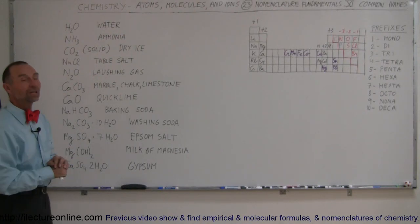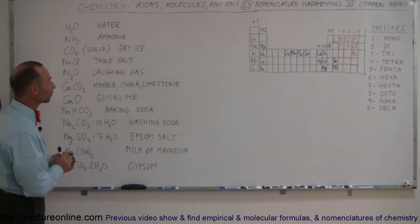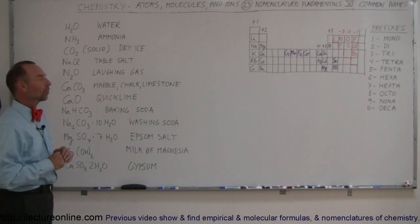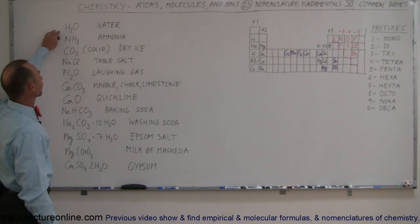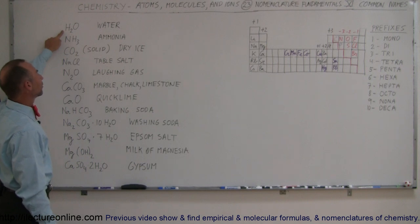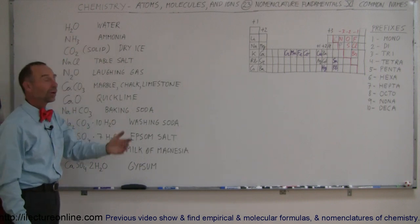This is the last video on the basic nomenclature in chemistry. We're going to look at some common names. So even though we may have chemical formulas for this, for example we can call this dihydrogen oxide, we of course all know this as just water.